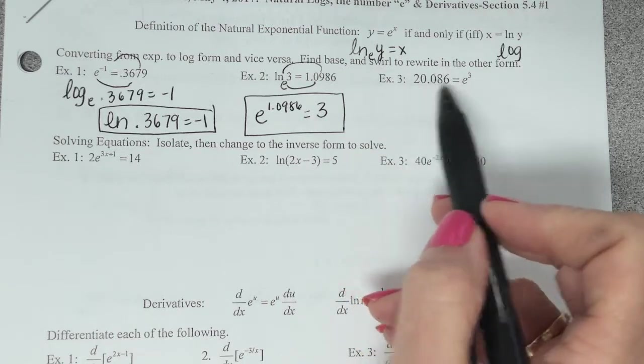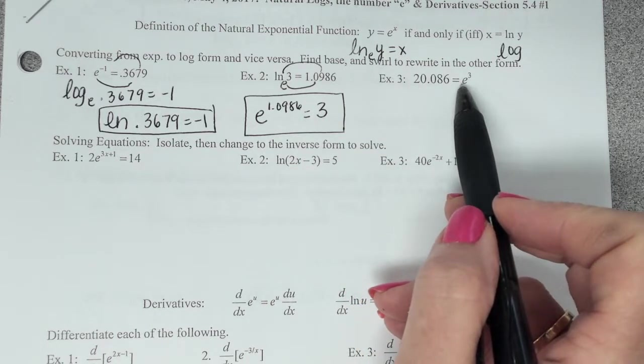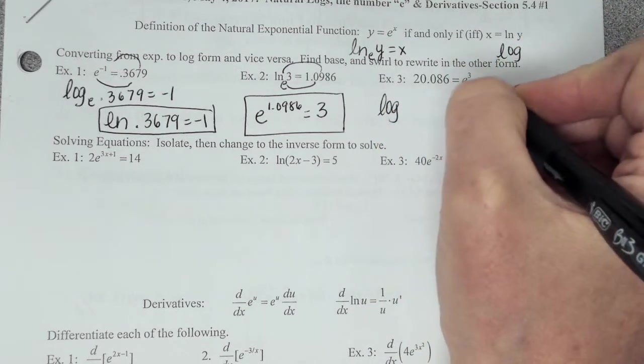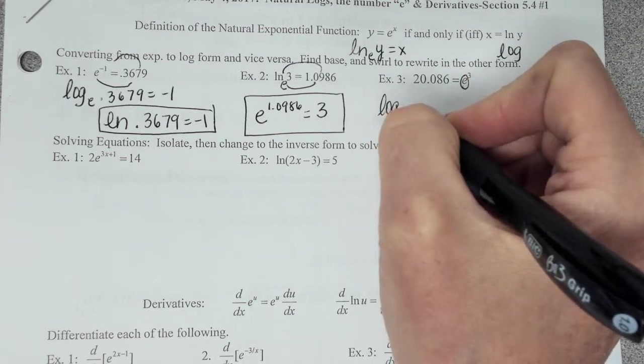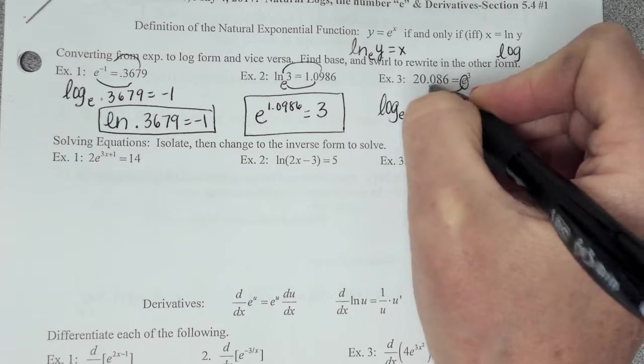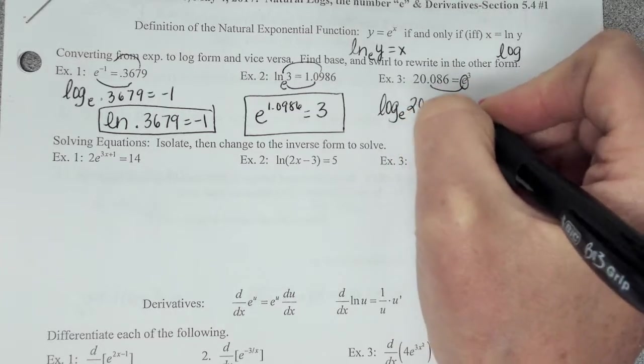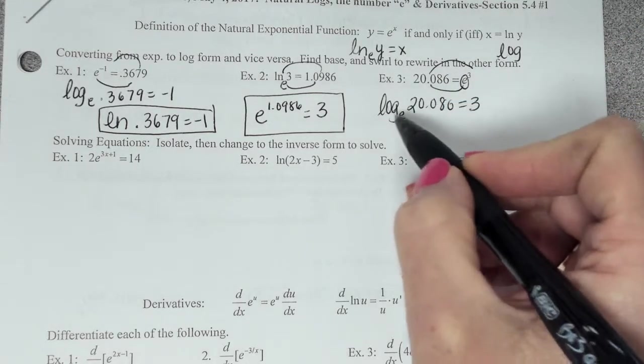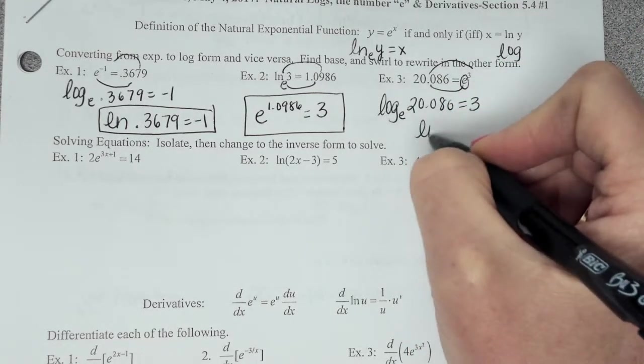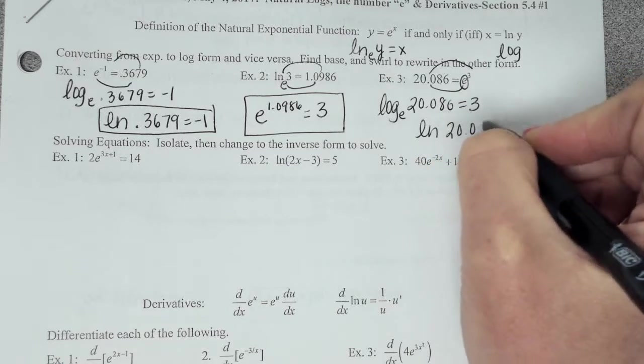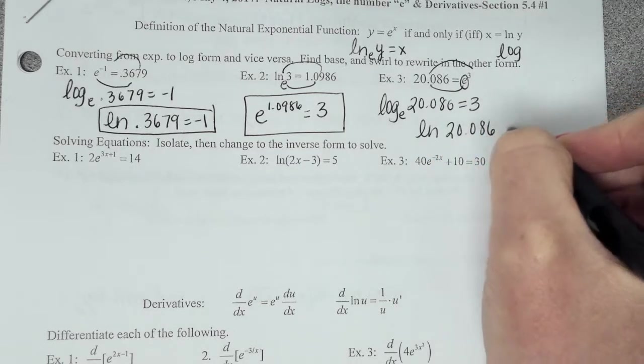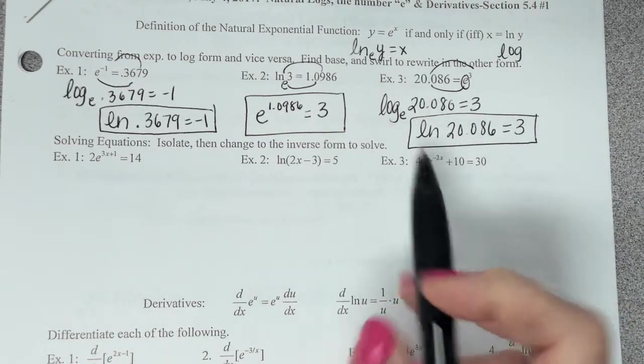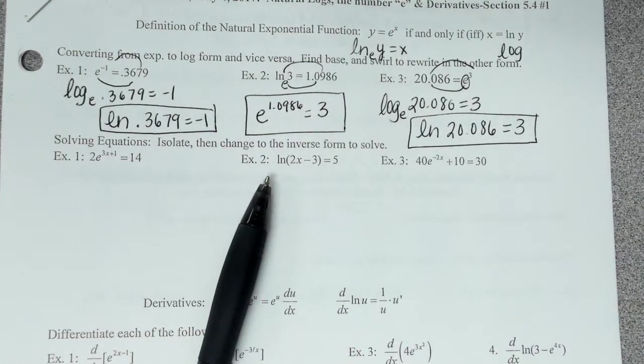All right, so the next one, we have an e, so we're going to rewrite it as a log. So I can just say it's going to be log. Find your base. Log base e stays the base. Back to this. Swirl it back around to the exponent. Equals 3. So another name for log base e is natural log. And you don't have to write out that log base e if you don't want to. You can go directly to the natural log. I just wanted to explain how that all works.